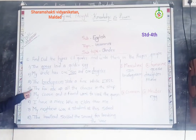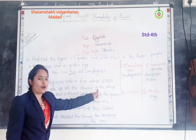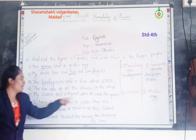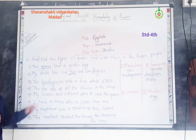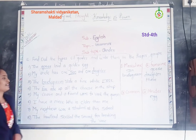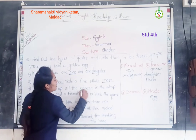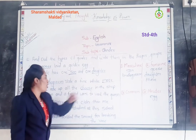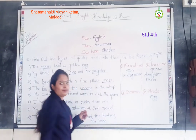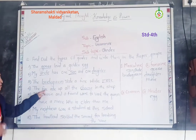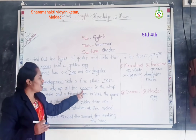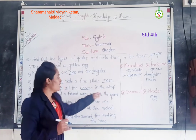Fourth sentence: The fox ate up all the cheese in the shop. In this sentence, fox is a masculine gender. Cheese is a thing, so it is a neutral gender. Shop is also a neutral gender.